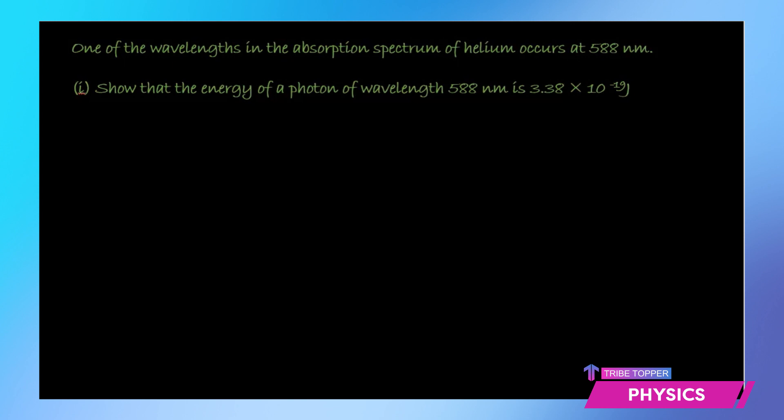Our question says that one of the wavelengths in the absorption spectrum of helium occurs at 588 nanometers. They say show that the energy of a photon of this wavelength 588 nanometer is 3.38 times 10 to the power minus 19 joules.